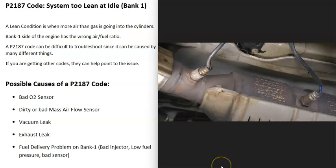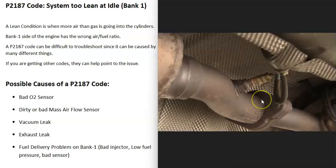There are oxygen sensors located on the exhaust and they do two things: they monitor the catalytic converter, and they monitor how much oxygen was burnt off during combustion. They report this information back to the computer, which uses it to adjust the air-fuel ratio going into the cylinders. When you get a P2187 code, those O2 sensors are reporting that the bank one side of the engine is running lean — meaning more air than gas is going into that side.